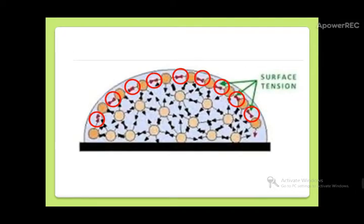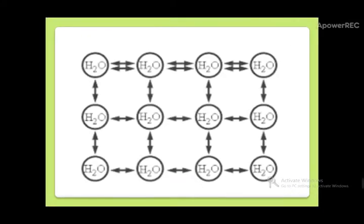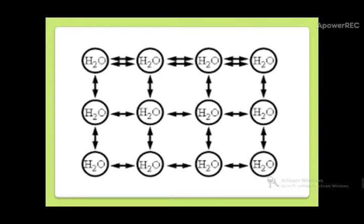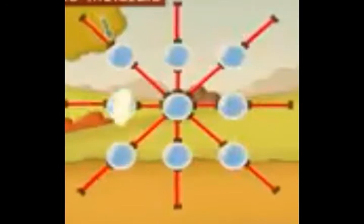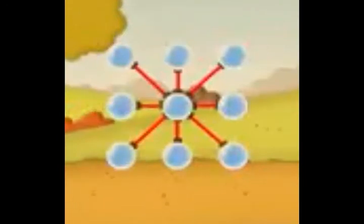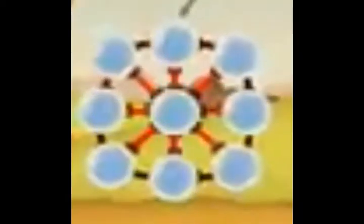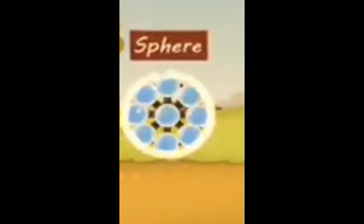If it holds the tension in it, it will be surface tension. On the surface, it will always have tension. At the surface, it will also be tension. For example, water is in a square shape. If you have any water, the water will be in a spherical shape.